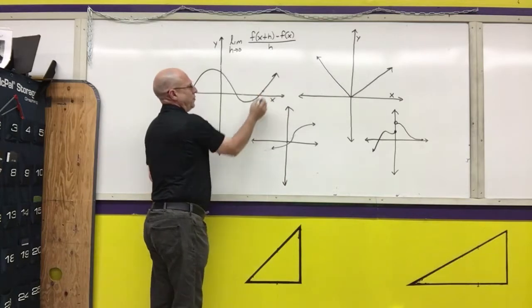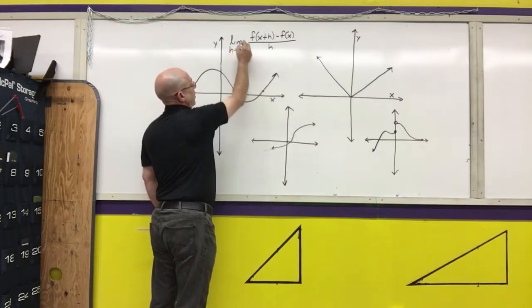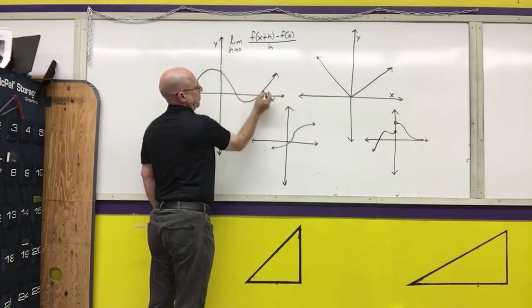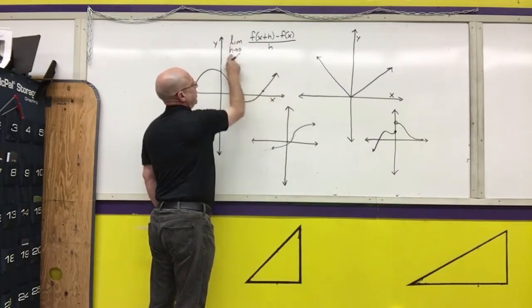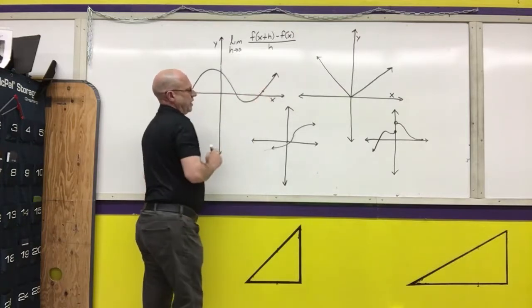And we were able to approximate what the—well, we used tables to approximate what the slope of the line was there. Then we learned how to take limits so we could find out what the actual slope of the tangent line was.